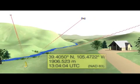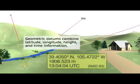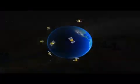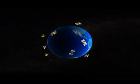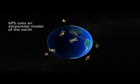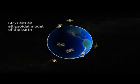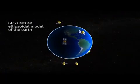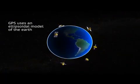we are no longer limited to separate horizontal and vertical datums. Today, we have access to geometric datums, which combine latitude, longitude, height, and time information. The height information derived from GPS is relative to something called an ellipsoidal model of the Earth, instead of to sea level.